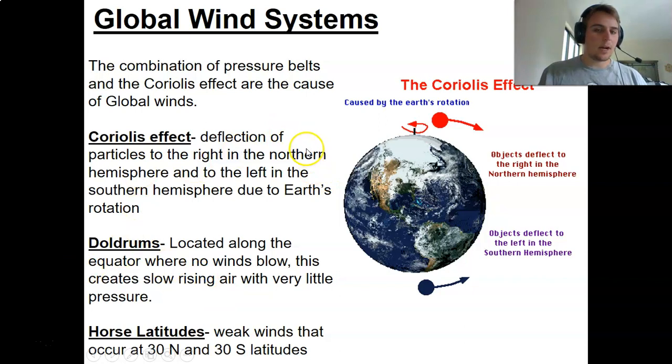Hopefully that makes sense. I will drop a video in the module that these are in, so you guys can see a better example of what that looks like. So we've got the Coriolis effect. That affects the global wind systems.